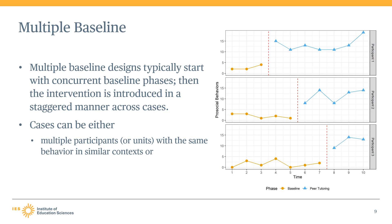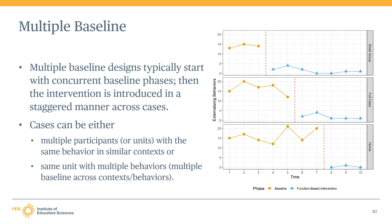The same effect of history or maturation is unlikely to have occurred at three different times for three different cases. Each row in the plot can be referred to as a tier, which often corresponds to a case within the design. Cases can be multiple participants with the same behavior in similar contexts, as shown in the multiple baseline across participants design on the right. The multiple baseline design can also be used to examine intervention effects in different contexts for the same behaviors, or different behaviors for the same unit, as shown in the multiple baseline across contexts example.